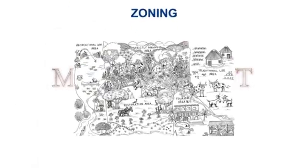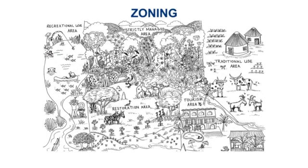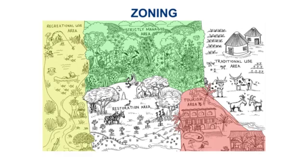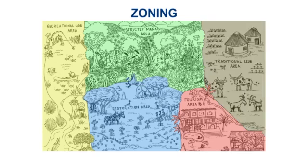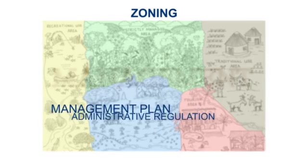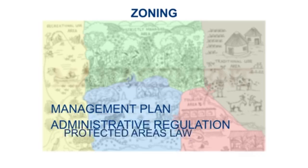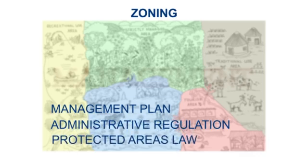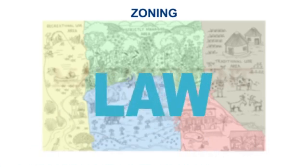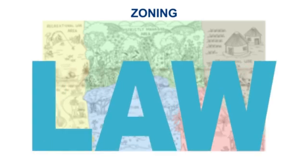Protected areas can be divided into different zones, such as strictly managed areas, tourism areas, recreational use areas, restoration areas and traditional use areas. Zones can be established by the management plan, administrative regulation or the protected areas law. In all cases, the protected areas law should recognise the concept of zoning as a management tool.